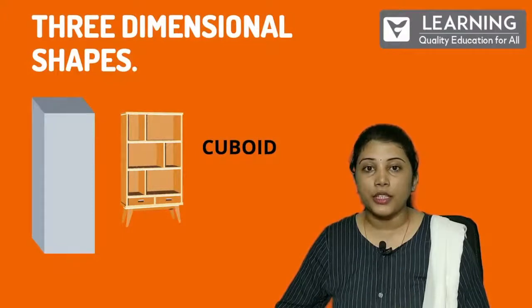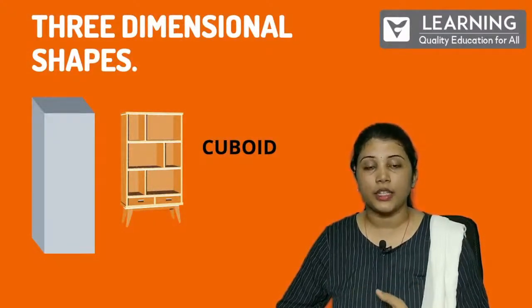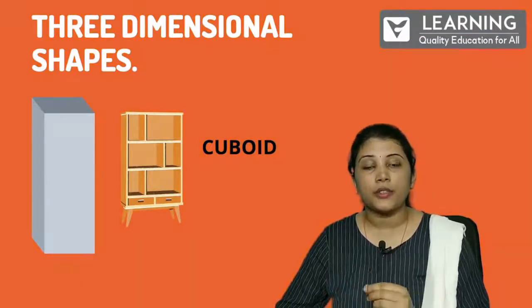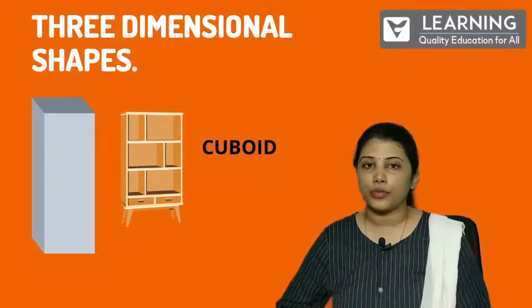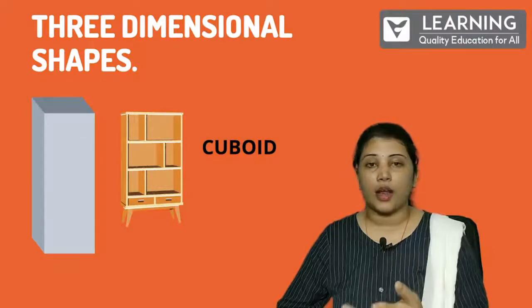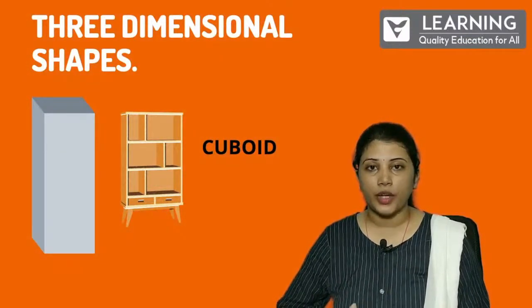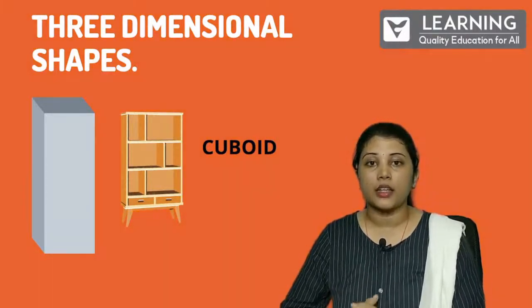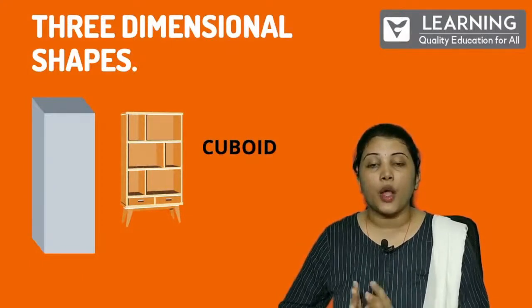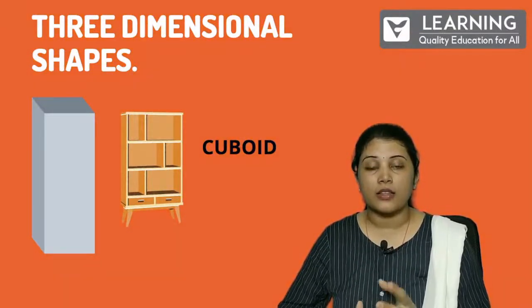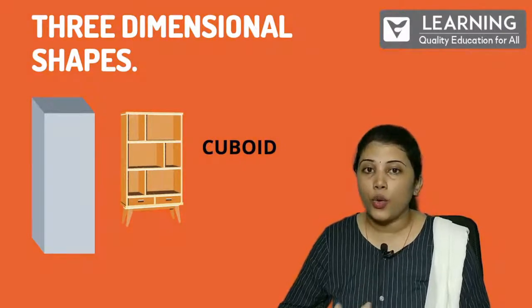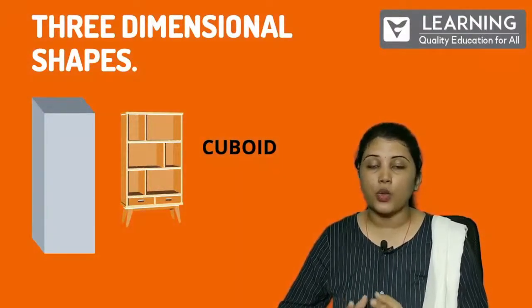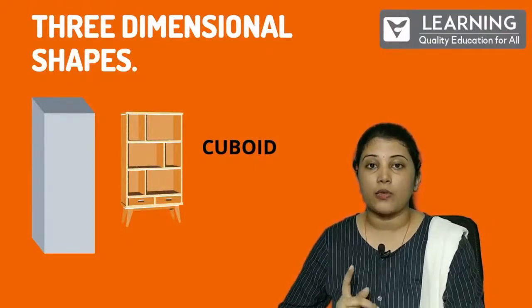Now, three-dimensional figures or three-dimensional shapes are having different corners and different figures. They are very different from square, rectangle, triangle, and circle. You've got how many corners are in a cube, cuboid, cone, and triangle, whereas sphere or circle is having no edges, no corners. Now you have got how these shapes are formed.